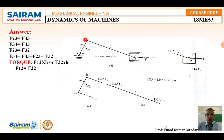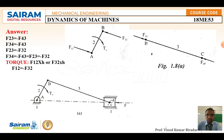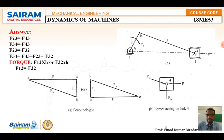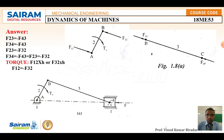If you consider from point three, the torque equals F32 multiplied by height h, giving the same value. F12 equals minus F32 — same magnitude but opposite in direction. Once you calculate the free body diagram and determine the directions, you can finalize the forces. For element three, it is a two-force member in equilibrium, so you draw a parallel line exactly opposite to the line of action.